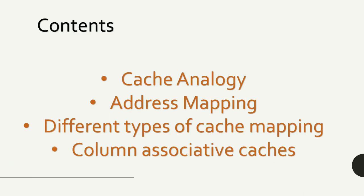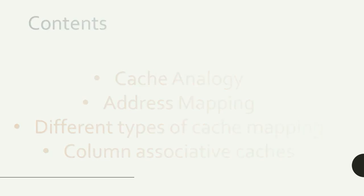These are the contents I'll be covering in this video: the cache analogy, address mapping, different types of cache mapping, and column associative caches. This gives a general idea of how column associative caches are different from the rest of the general cache mapping techniques that we have.